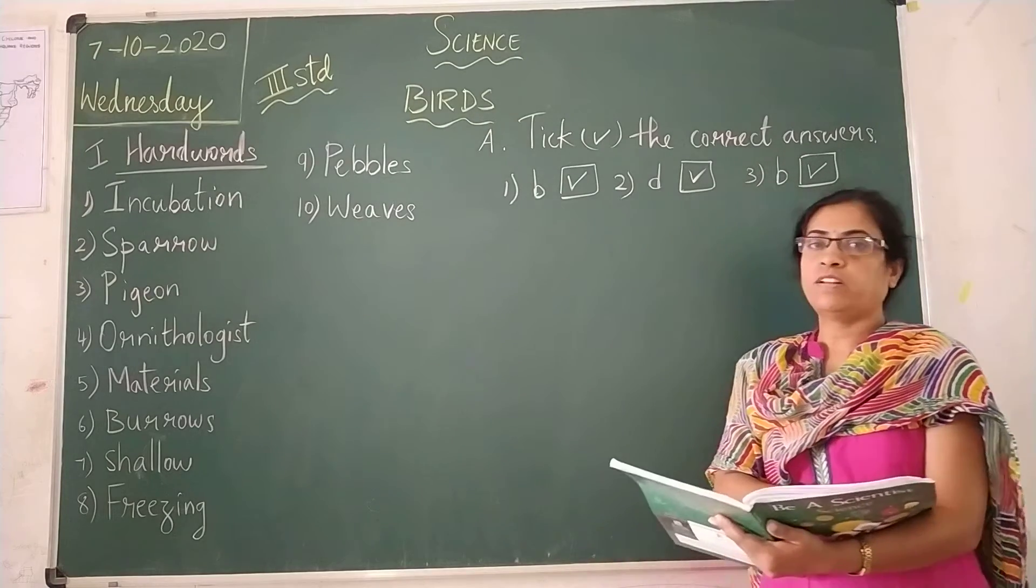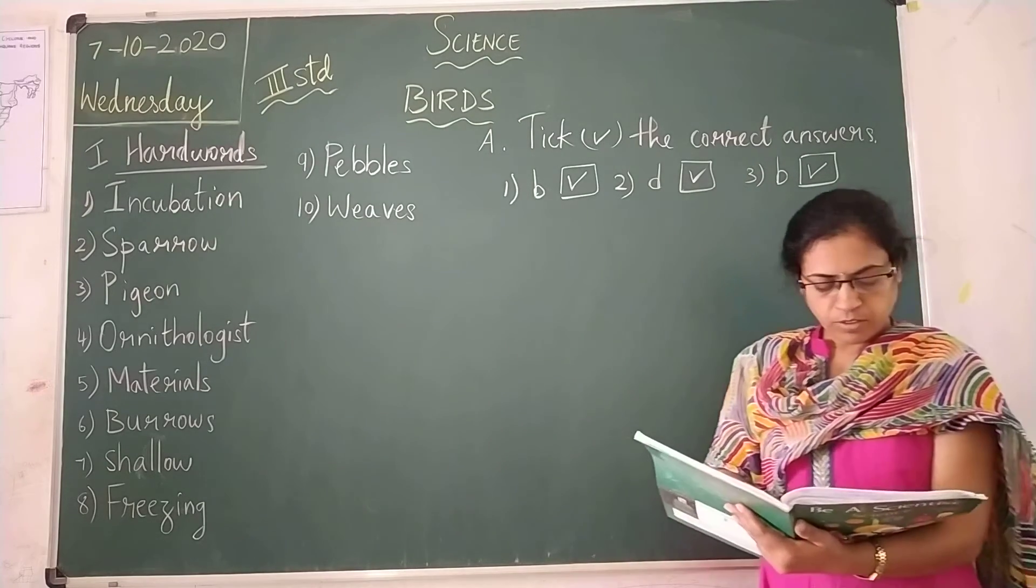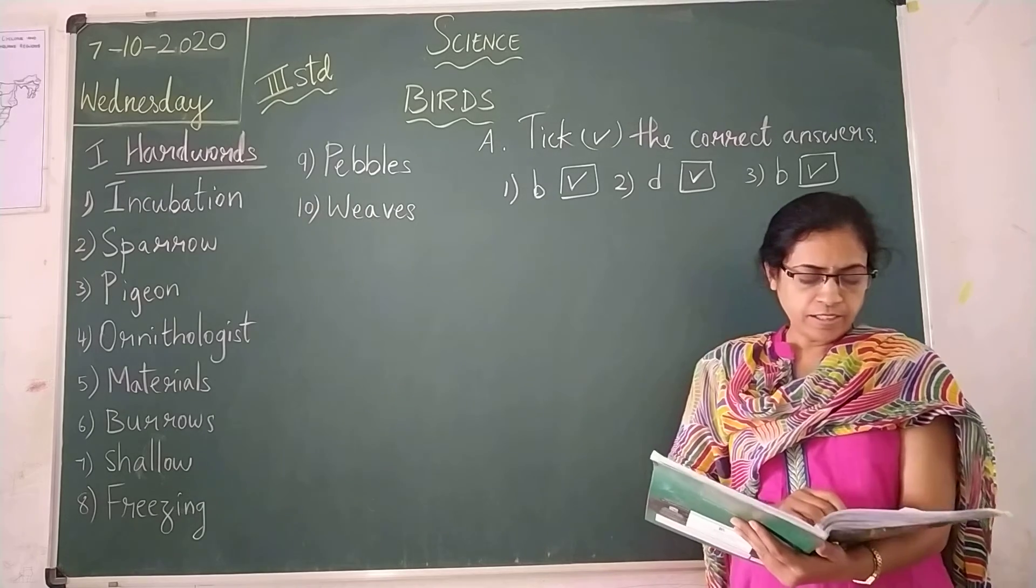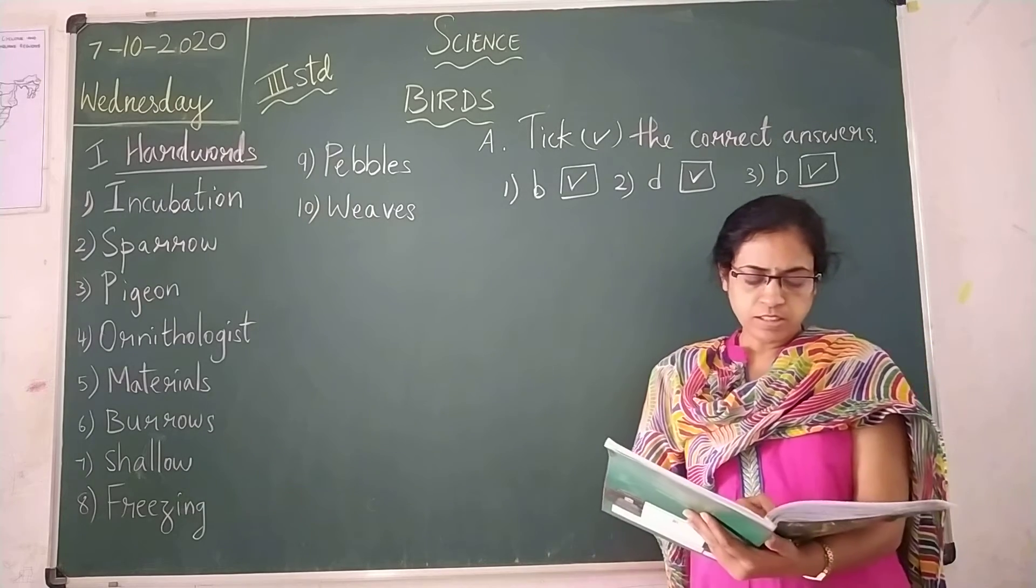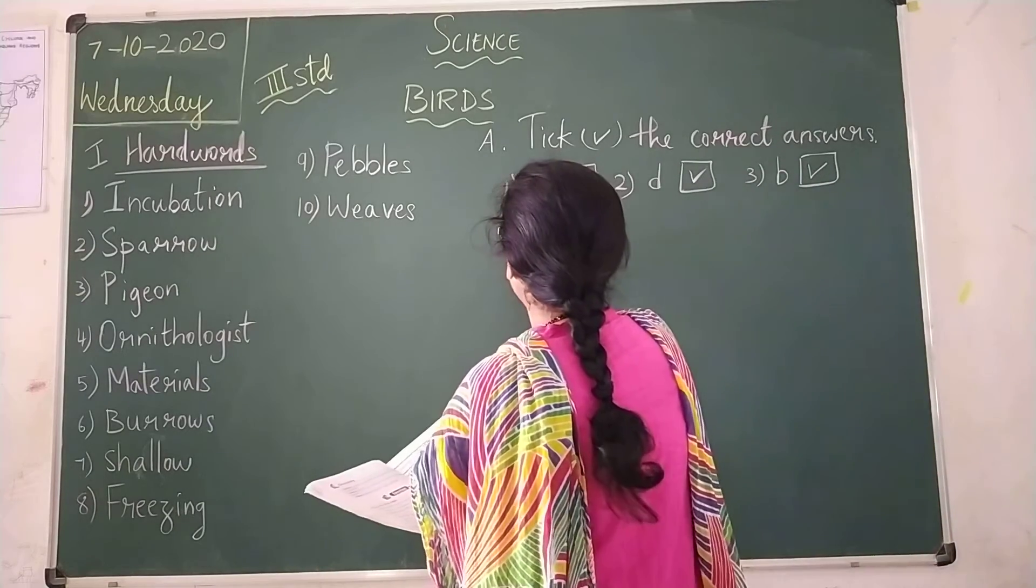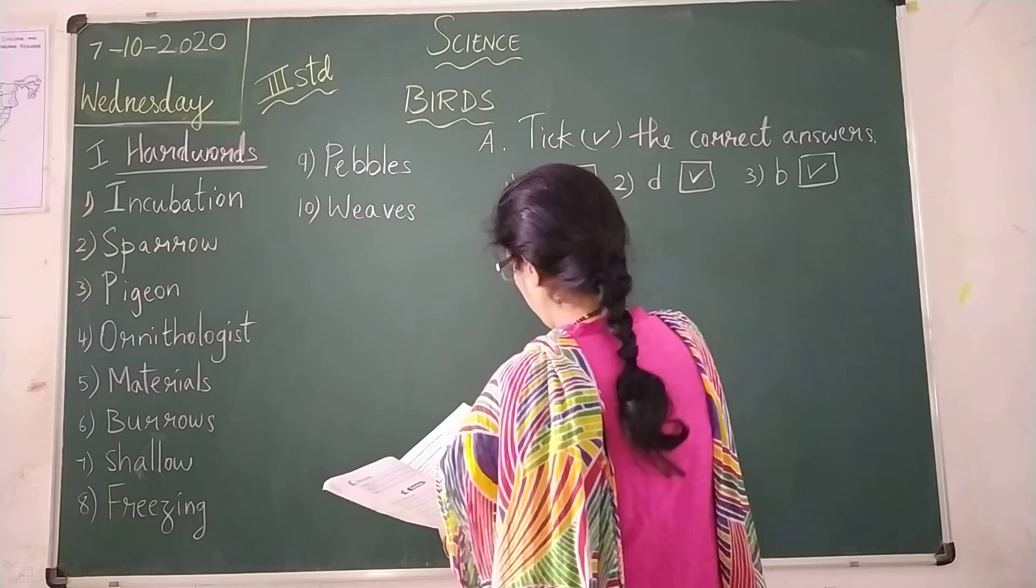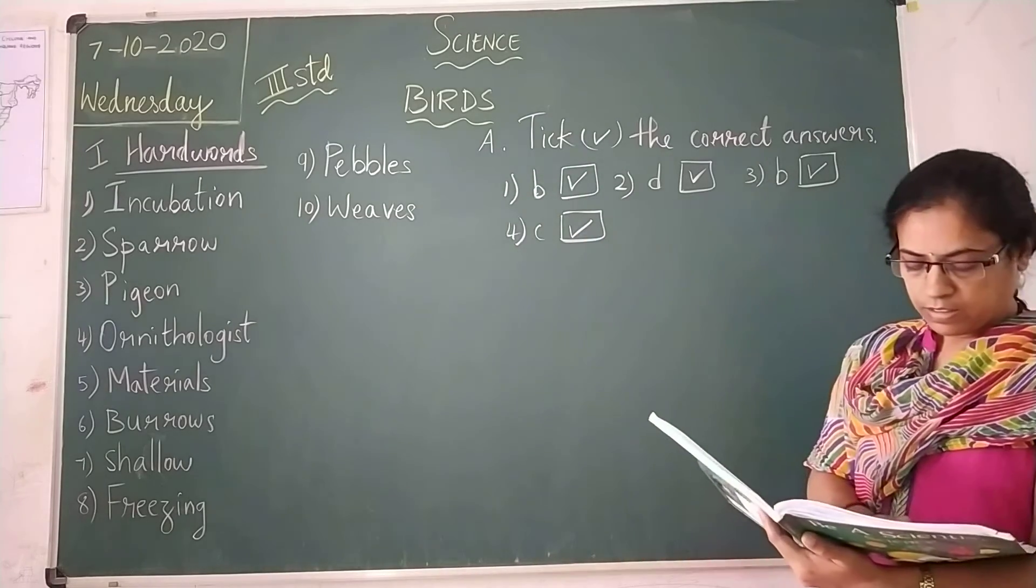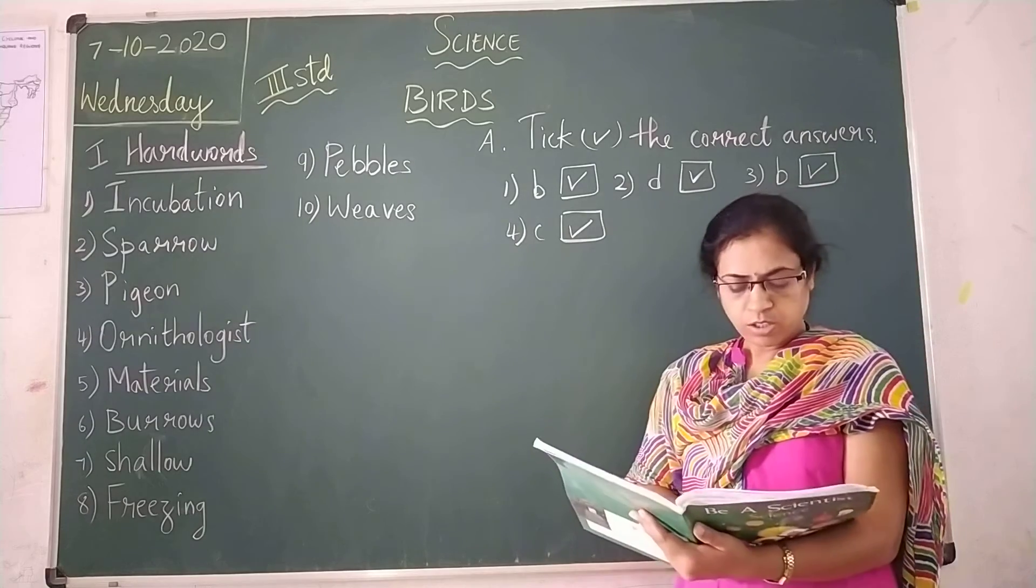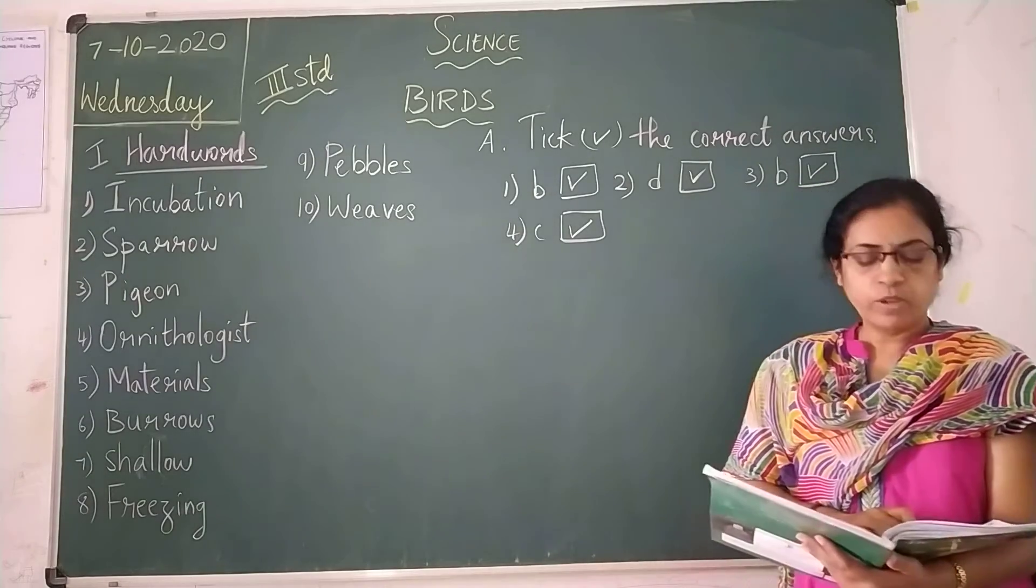The fourth one, which of the following birds has talons? Duck, goose, vulture, sparrow. So, option C that is, what is the correct word? That is, vulture. Okay. Which of the following birds has talons? That is, vulture.